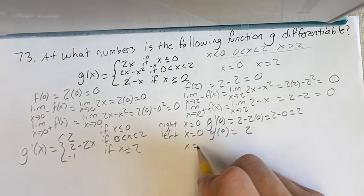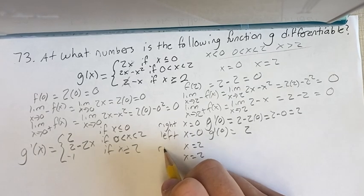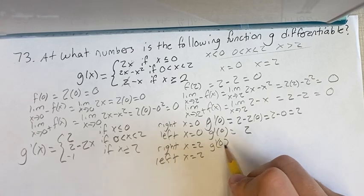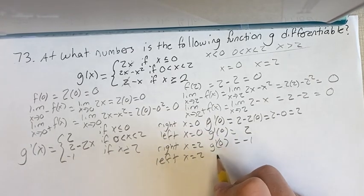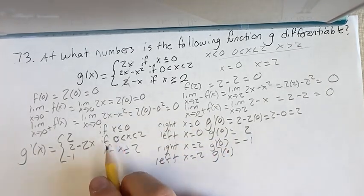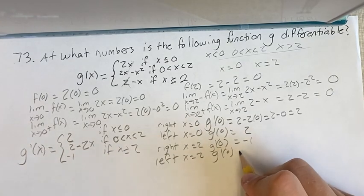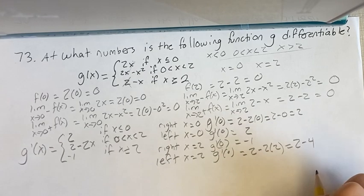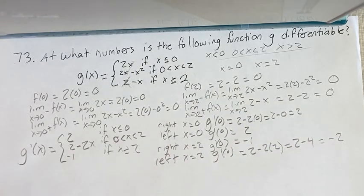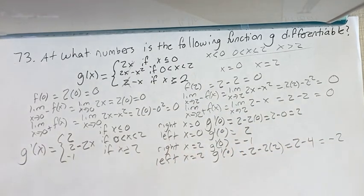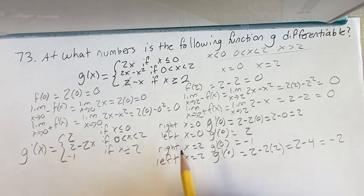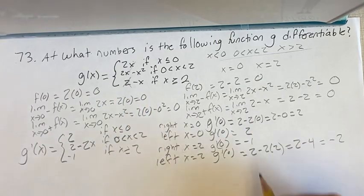And for x equals 2, checking a similar thing, we get g prime of 0 from the right is just negative 1. And g prime of 0 from the left, going from here, x is less than 2, it's 2 minus 2 times x is 2 times 2. It's 2 minus 2 times 2 is 4, it's minus 2. Negative 1 is not equal to negative 2. Therefore, it is not differentiable at x equals 2.